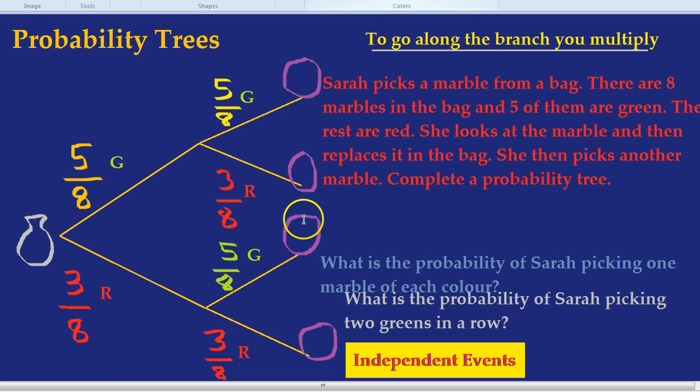It would be these two middle branches: that's a green then a red, and a red then a green. Notice it didn't care which one came first, it just wanted one of each color. To go along the branch we multiply, so five out of eight times by three out of eight to find the probability of a green then a red. 5 times 3 is 15, 8 times 8 is 64, so that one is 15 out of 64.